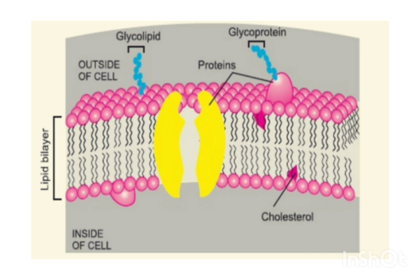It is present around all cells (Ki tamam cells ke around maujood hoti hai). So what is its function? It's semi-permeable — semi means half. Yeh kuchh cheezo ko apne andar se guzarni deti hai aur kuch ko nahin guzarni deti. It allows some particles to pass through while it doesn't allow all particles to pass through. Its benefit is that the cell will be able to maintain its functionality and all which is working inside the cell.